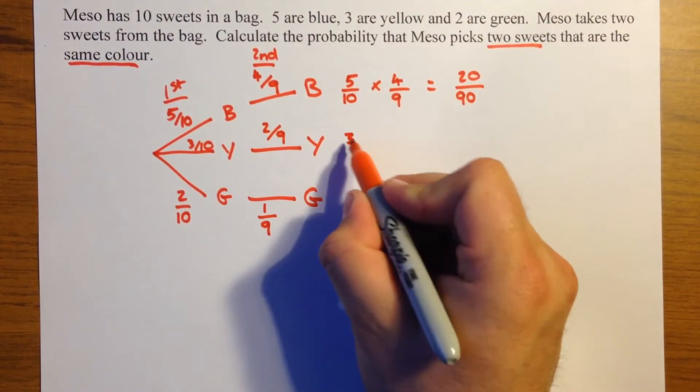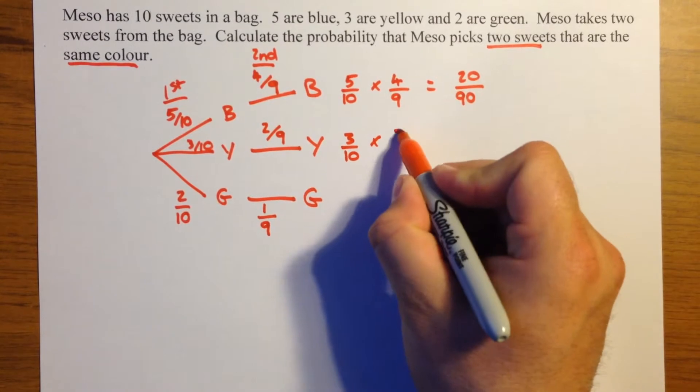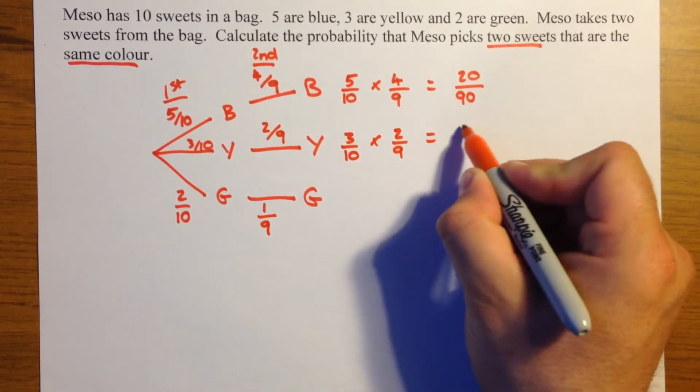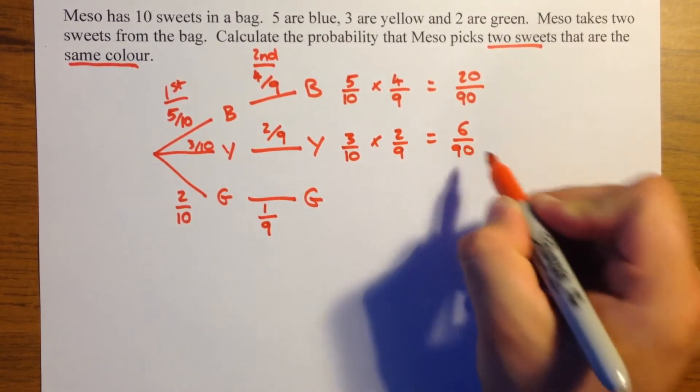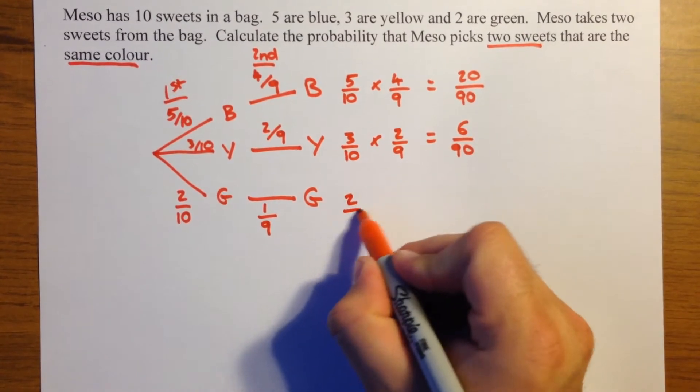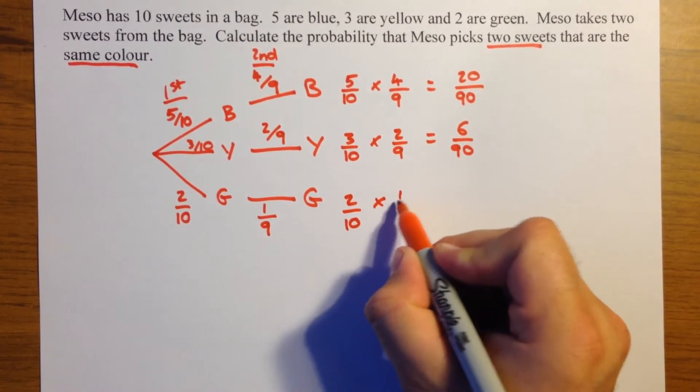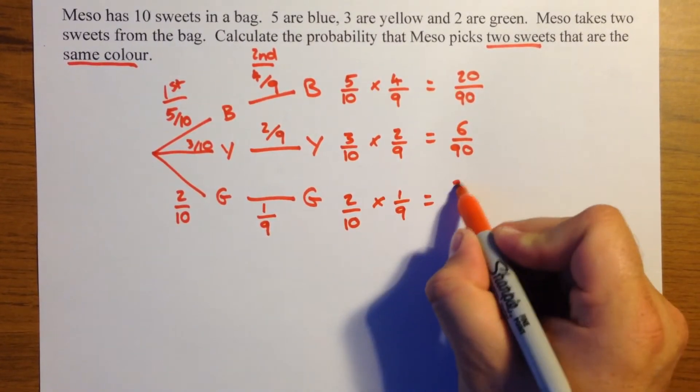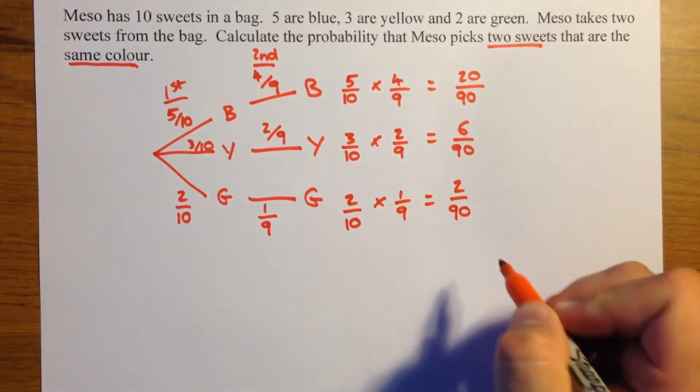In this combination, we've got three tenths multiplied by two ninths, which is six ninetieths, and two tenths multiplied by one ninth, which is two ninetieths.